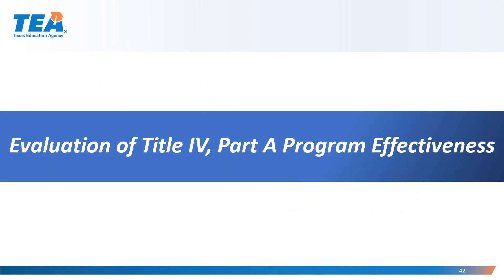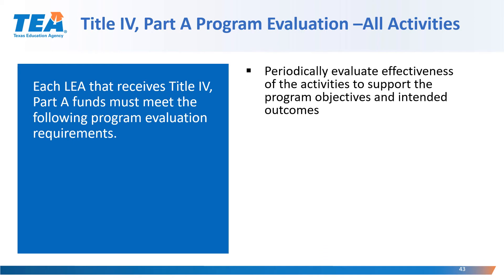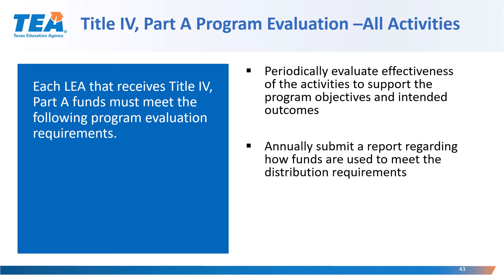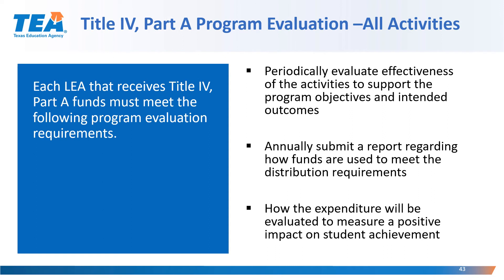Regarding the evaluation of Title IV Part A program effectiveness, each LEA that receives Title IV Part A program funds must meet the following program evaluation requirements: periodically evaluating the effectiveness of the activities to support the program objectives and intended outcomes; and annually submitting a report regarding how funds are used to meet the distribution requirements, and how the expenditure will be evaluated to measure a positive impact on student achievement. Every program and activity supported with Title IV funds must be able to meet these requirements and have an evaluation of effectiveness.